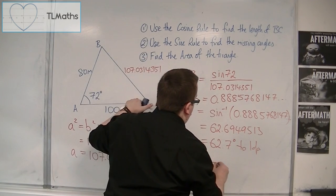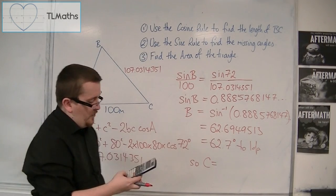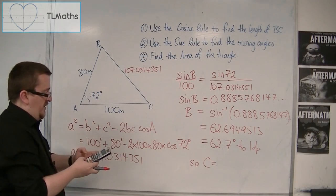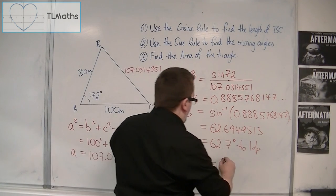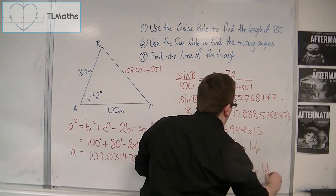So, c is 180 degrees. Take away this angle. Take away 72. And that gives me 45.3 degrees to one decimal place.